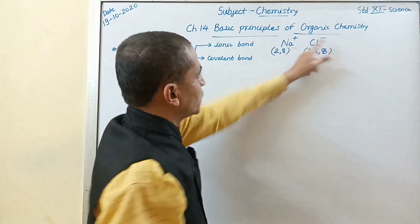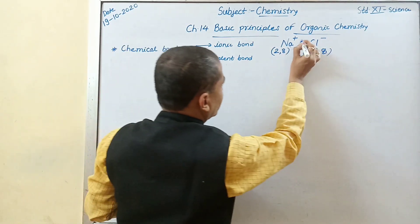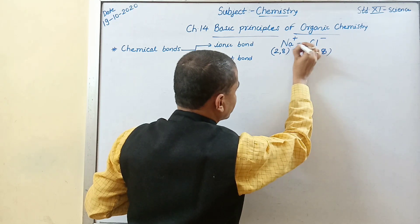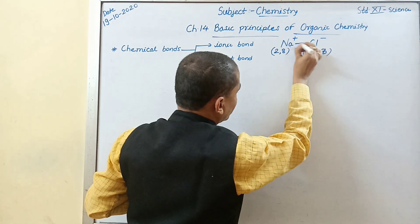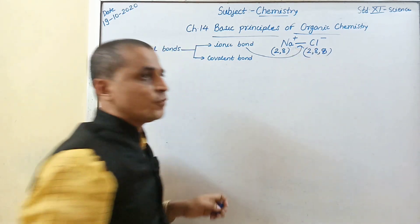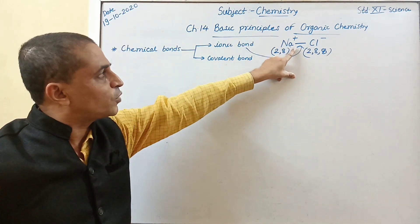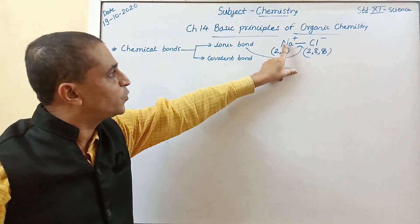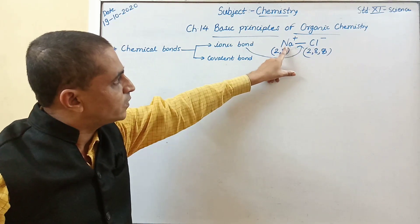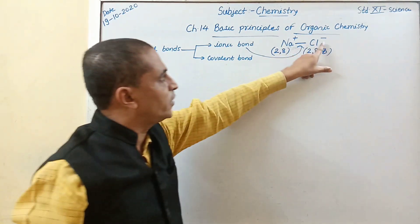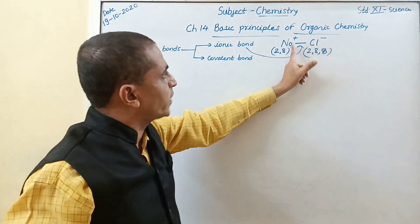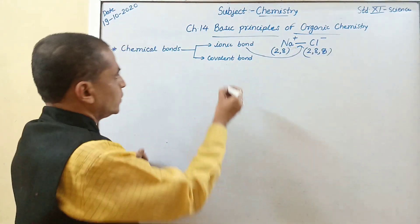Now, sodium is positive and chlorine is negative. These are bonded together, and this bond is called the ionic bond. It is also called the electrostatic force of attraction between sodium ion and chloride ion. Na plus having positive charge is called a cation, and chloride having negative charge is called an anion. Remember: cation and anion.